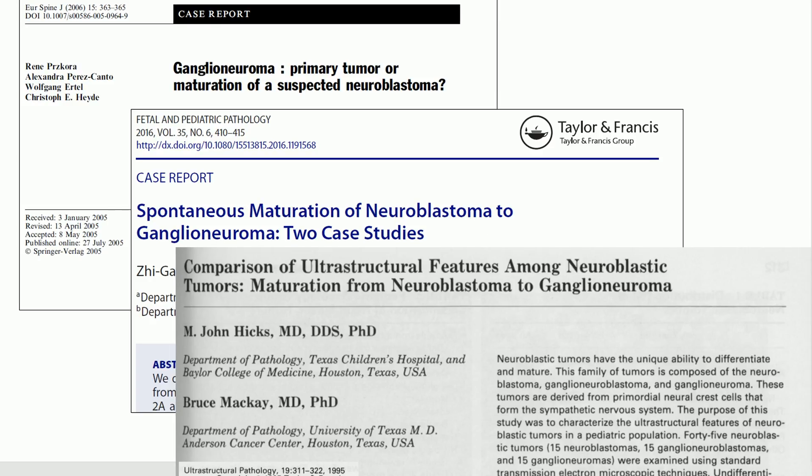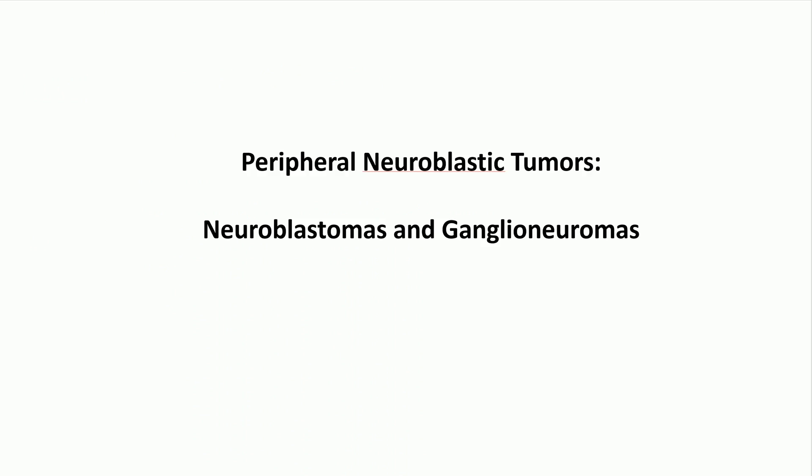So that completes our description of peripheral neuroblastic tumors. We went over an example of ganglioneuroma and multiple pictures of neuroblastoma. If you like this video, please check us out at our website, Facebook page, and Instagram, all entitled Adventures in Neuropathology. Thank you very much. Have a good day.